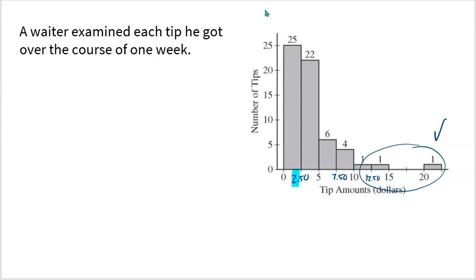That's it for histograms. They are my favorite way of representing quantitative data. If you open up an AP Stats exam, you're probably going to see five to six histograms throughout. Make sure you know how to talk about them, analyze them, and know what those bars represent — whether it's the counts of data in each interval or the percentage of data in each interval for a relative frequency histogram.